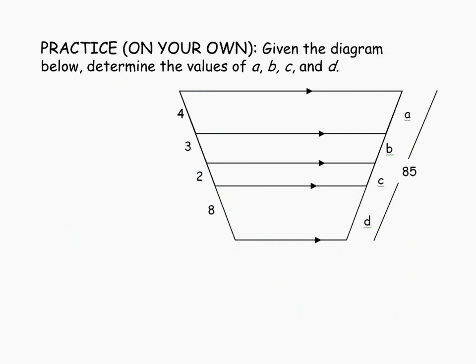To end this lesson, here's another practice question. You'll be finding the values of A, B, C, and D using the transversal splitter idea, similar to the last example. Notice that the entire measurement of 85 is given to you.